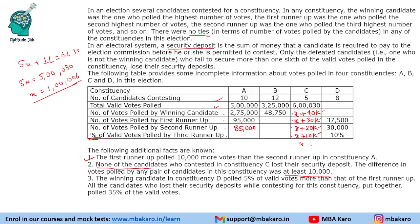Also, none of the candidates lost their security deposit. The deposit is lost if you get less than one-sixth of the total votes. Dividing 6,30,000 by six gives 1,05,000. So every candidate must secure more than 1,05,000 votes. Since X equals 1,06,000, this is a carefully crafted value — just above the threshold.